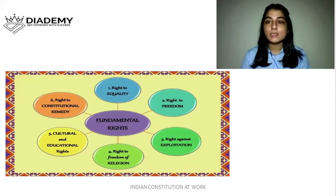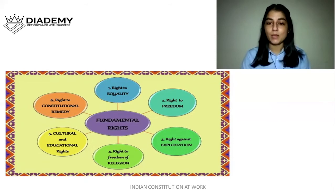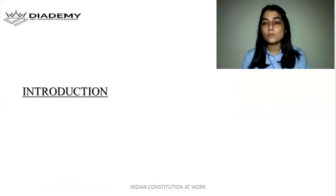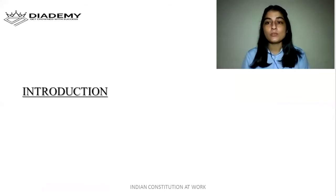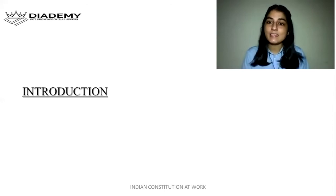This image shows all six fundamental rights that we will cover. There are six fundamental rights: right to equality, right to freedom, right against exploitation, right to freedom of religion, cultural and educational rights, and right to constitutional remedies. But before beginning with these rights, we should know why we call these rights as fundamental rights. The meaning of the word fundamental is essential. So what is so essential about these rights? How are these rights different from the other ordinary legal rights?